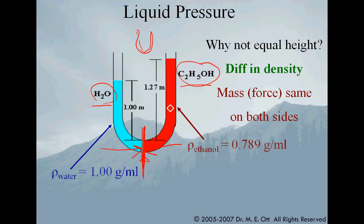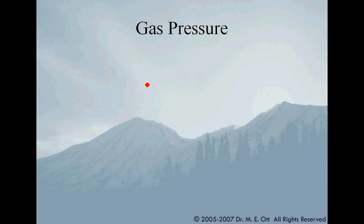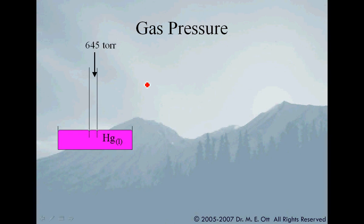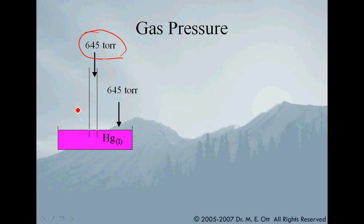This helps us arrive at a definition of gas pressure. Here I take a container of liquid mercury and put a glass tube in it. The ambient atmospheric pressure is 645 torr — torr is a unit of pressure we'll discuss in a moment. The atmospheric pressure pushes down on the inside and the outside of the tube equally, which is why the liquid levels inside and outside the tube are the same. The pressure pushing down here and the pressure pushing down there is the same.